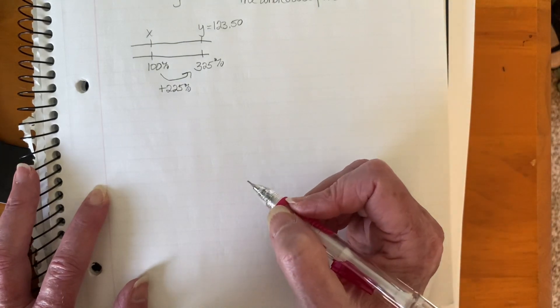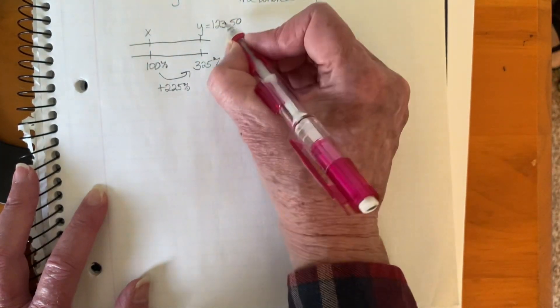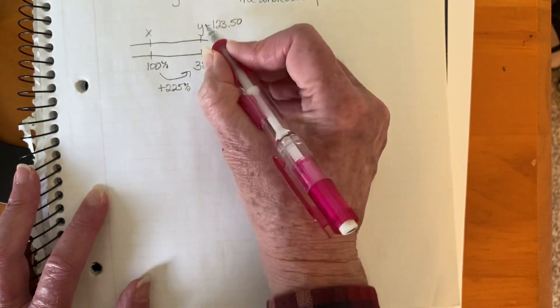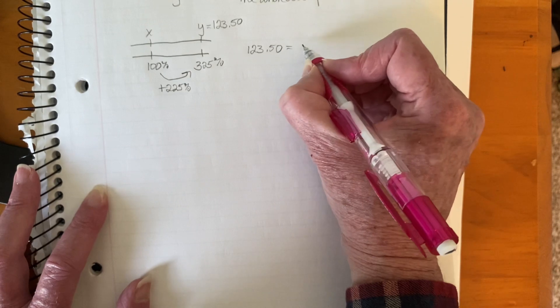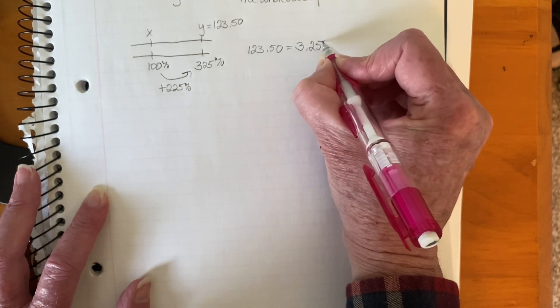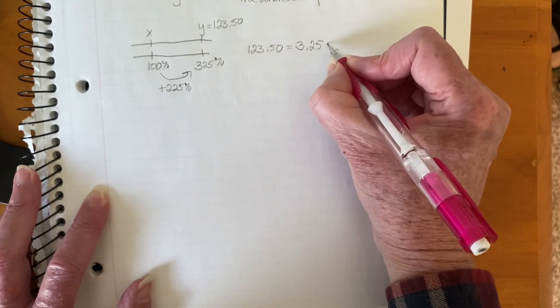So now we've got this set up that we can solve for X. So Y is what percent of X? Y is 123.50. What percent is that? That is 325%. So that's 3.25 times X.